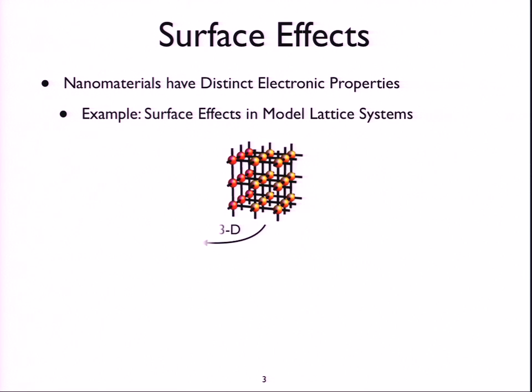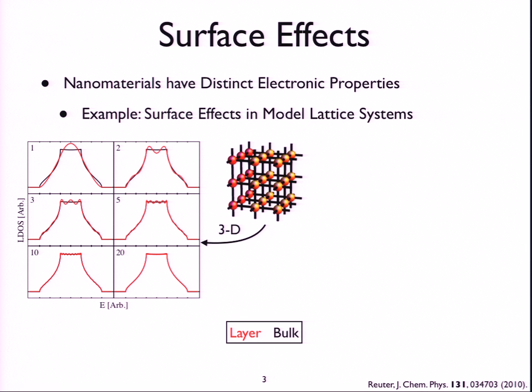And so just as an example of one thing that we can see electronically are surface effects in model lattice systems. If we look at what I would call a conventional, three-dimensional material, we can look at a quantity called the local density of states, which just tells you basically how many quantum states you have in an energy range. And look at it both in the bulk, where you're infinitely far from the surface, and then at any given layer at the surface, subsurface, second subsurface, et cetera.